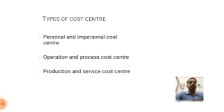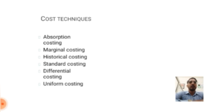Types of cost centers include: personal and impersonal cost centers, operation and process cost centers, and production and service cost centers. Costing techniques include: absorption costing, marginal costing, historical costing, standard costing, differential costing, and uniform costing.